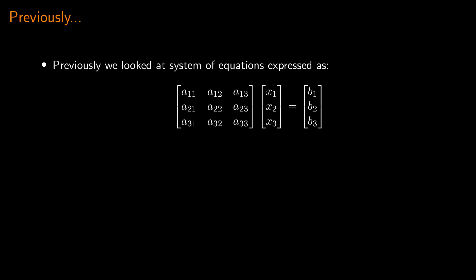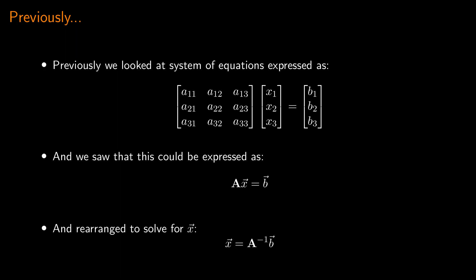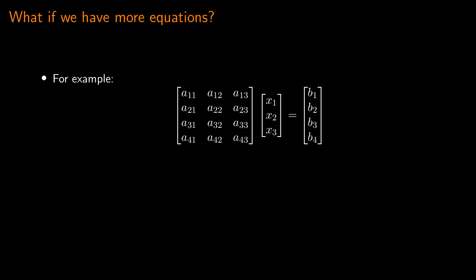Just to quickly recap what we have talked about before: we started out, quite a few episodes ago, looking at linear systems of equations, and in particular we looked at some example systems with three equations and three unknowns. We expressed those in general form, then in vector notation, and then rearranged to give an equation for the vector x. We discussed how we could solve that system by either computing the inverse of the matrix A, or by using Gauss-Jordan elimination.